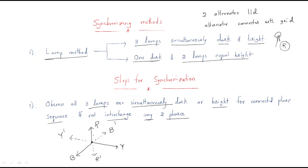If we connect any lamp and the supply is given, R is one direction and R dash is the other direction — it will simultaneously become dark or bright. If not possible, interchange any two phases so both are connected in the same phase.